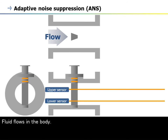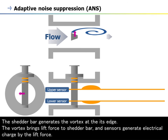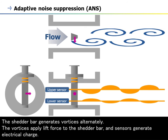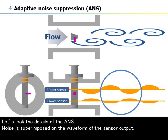Fluid flows in the body. The shutter bar generates the vortex at its edge. The vortex brings lift force to the shutter bar, and sensors generate electrical charge by the lift force. The shutter bar generates vortices alternately. The vortices apply lift force to the shutter bar, and sensors generate electrical charge. Let's look at the details of the ANS.